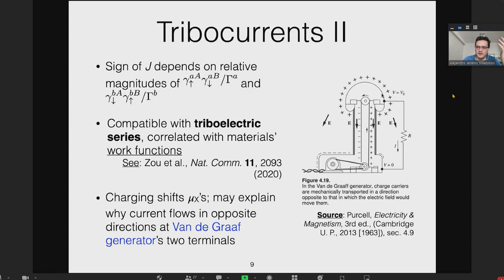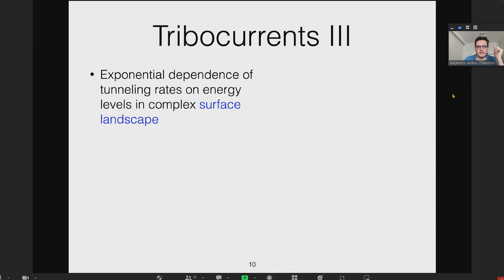Another very interesting thing that confused me as an undergraduate: the Van de Graaff generator has the same contact on bottom and top—metal brushes rubbing against the rubber belt—but electrons get off on the bottom and on the top, so current flows in opposite directions. What is different is the voltage, which shifts the electrochemical potentials.